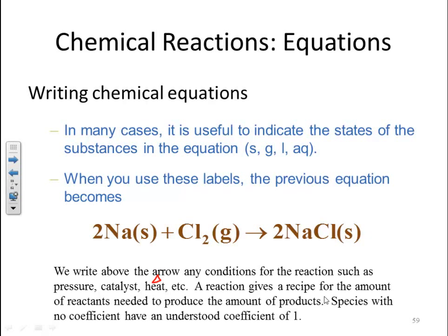The reaction gives a recipe for the amount of reactants needed to produce the amount of products. Species with no coefficients have an understood coefficient of 1. So what this is telling me is a recipe. It tells me if I take two sodium solids and one chlorine gas, I'll make two sodium chloride solids.